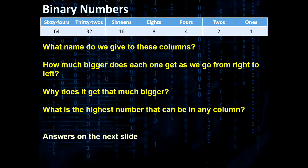How much bigger does each one get as we go from right to left? We can see that they get two times bigger. They double. The reason they get two times bigger is because we've only got two symbols for numbers, 0 and 1.